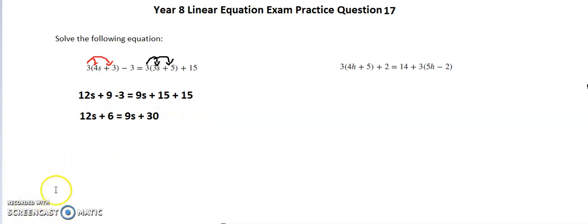The next step is getting my variables onto one side, so I'm going to take 9s from both sides. If I take 9s from both sides, that leaves me with 12s minus 9s is 3s, so 3s plus 6 is equal to 30.